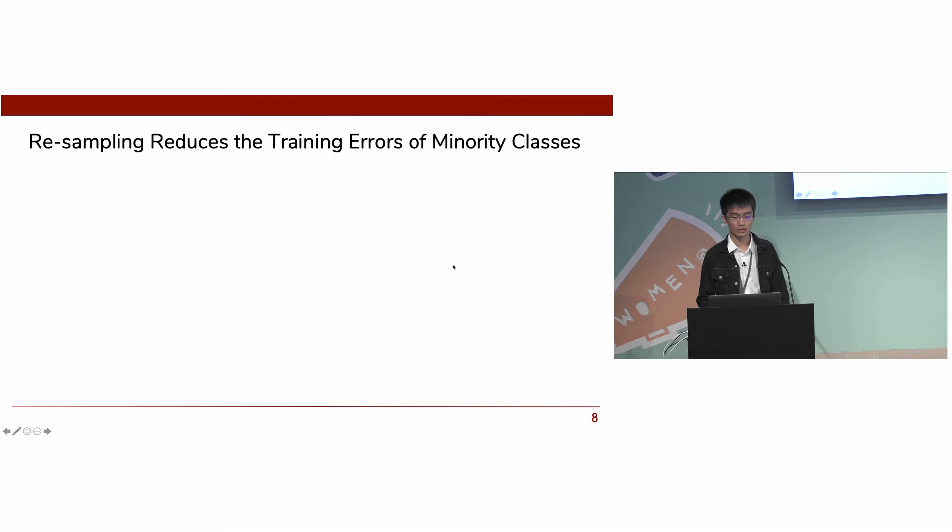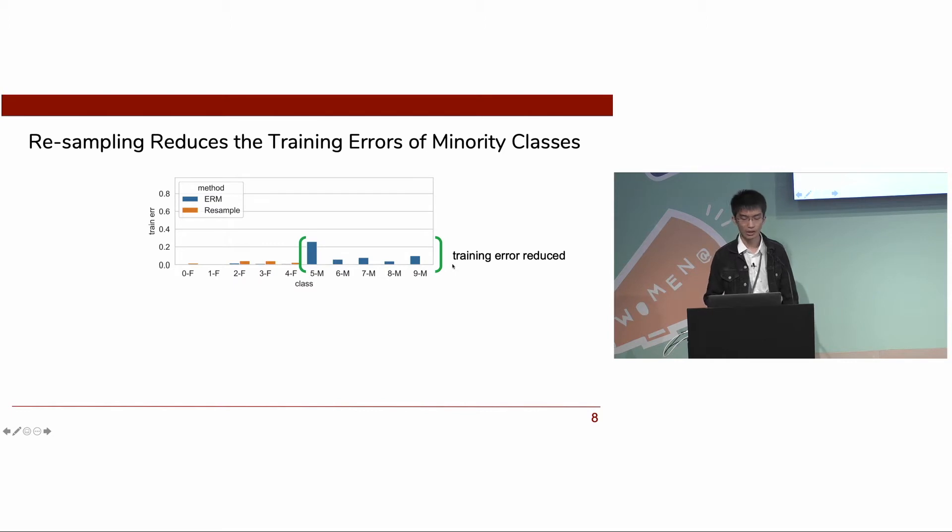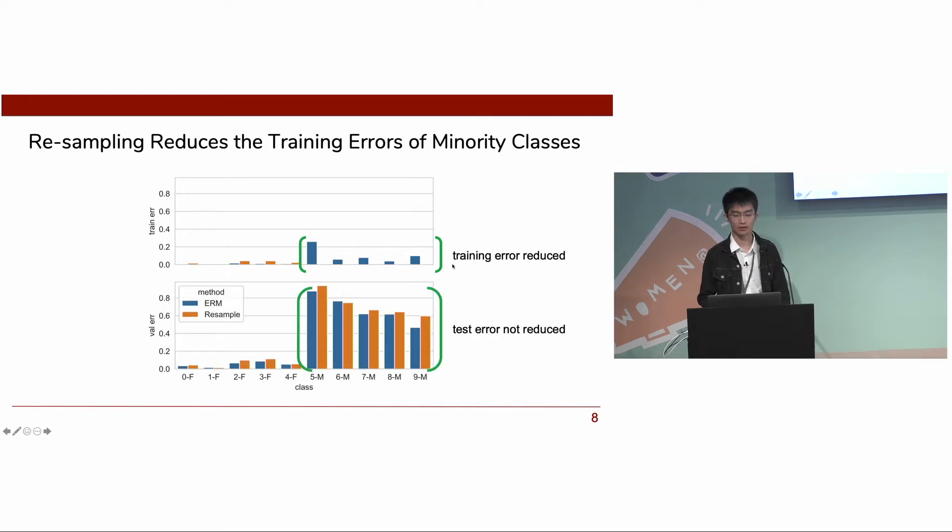If we leverage resampling schedule to train our ResNet32 model on imbalanced CIFAR, we could observe that the training error is indeed reduced. However, the test error is not reduced. It actually increased a bit, and we believe that this is due to overfitting.